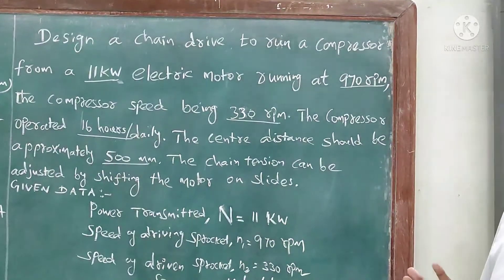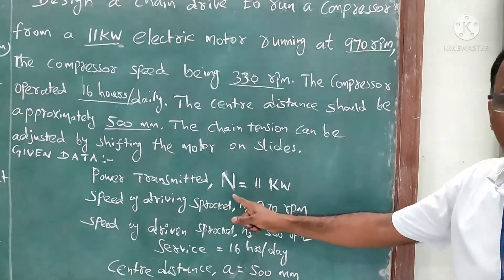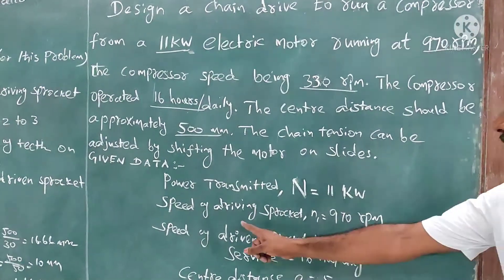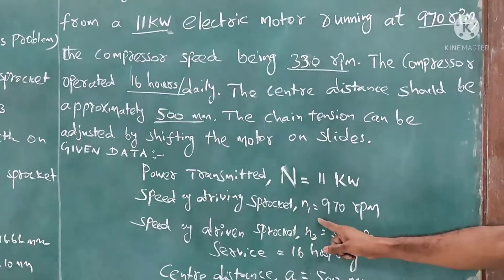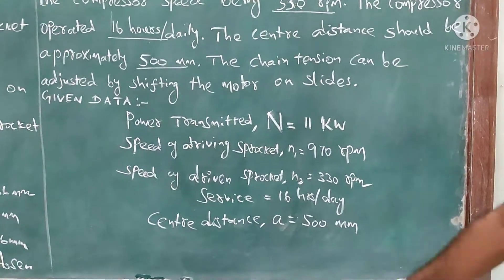The given parameters are: power transmitted according to chain drive, N = 11 kW. Speed of driving sprocket n1 = 970 RPM. Speed of driven sprocket n2 = 330 RPM.